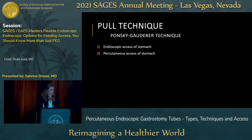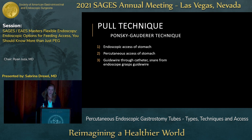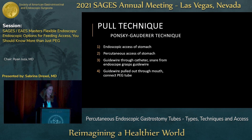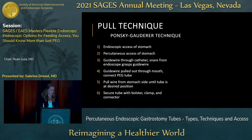Moving on to the different types of techniques: the first is the pull technique. You start by getting endoscopic access of the stomach and then percutaneous access of the stomach. You then place a guidewire through a catheter, remove the catheter, and place a snare to grab the guidewire and bring it up out of the mouth. You then connect the PEG tube to the guidewire — sometimes the hardest part of the procedure — and pull the guidewire out through the abdominal side until the PEG is at the desired location, then secure it with a bolster, clamp, and connector.